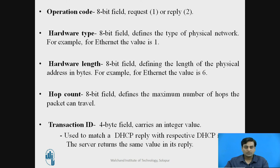The next field is hardware type. This field is also an 8-bit field that defines the type of physical network. Different physical networks include Ethernet, ArcNet, and ATM. This field contains a value of 1 if the hardware type is Ethernet.